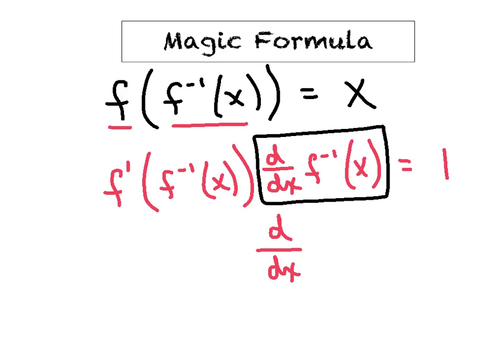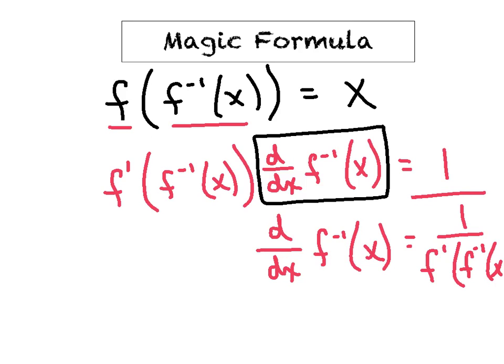So we said the derivative of f inverse is always going to be one divided by a special composition, f′(f⁻¹(x)), and I ran out of room there a little bit, but that's the special formula we're going to use, and it's kind of an unusual one, but we'll get a little practice using it here.